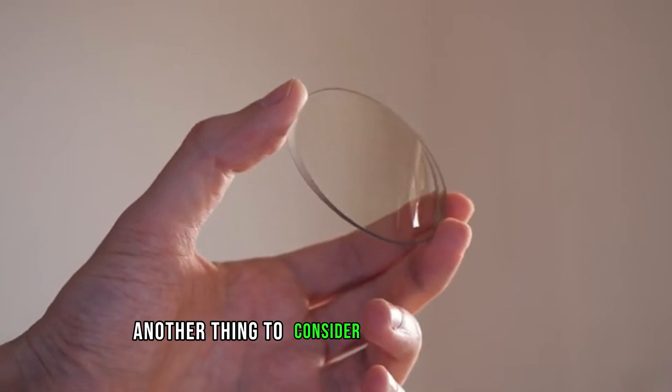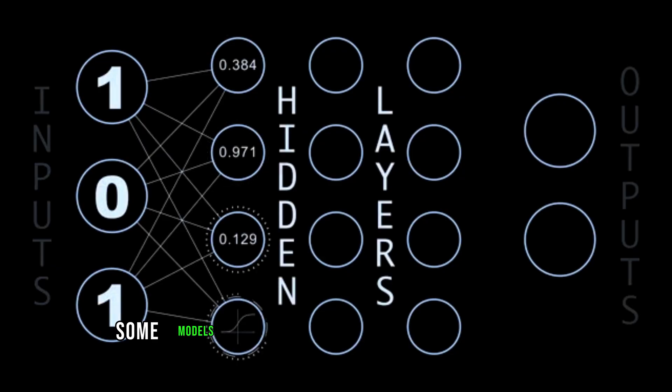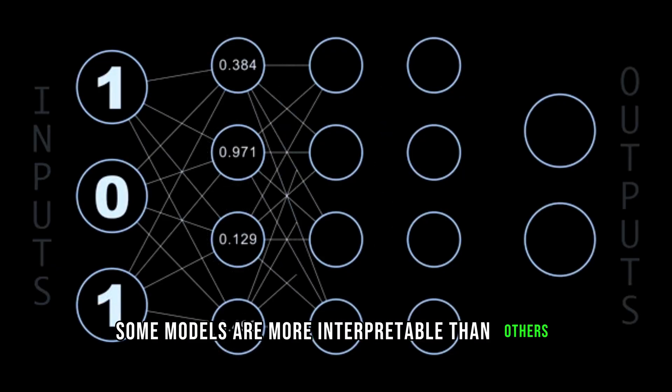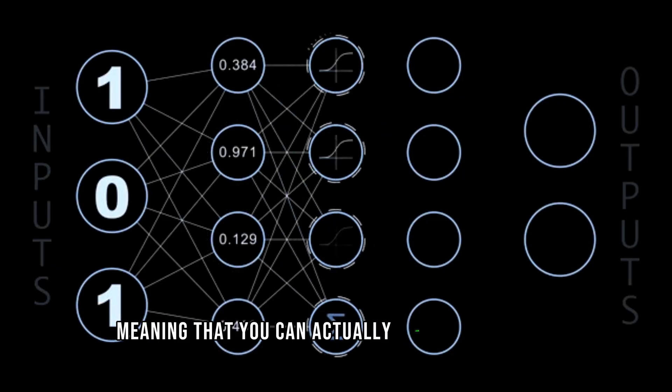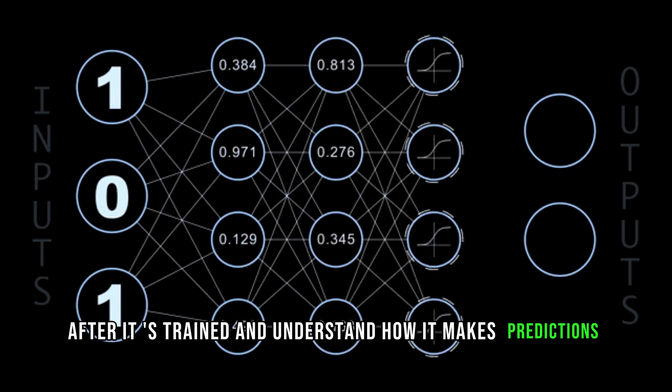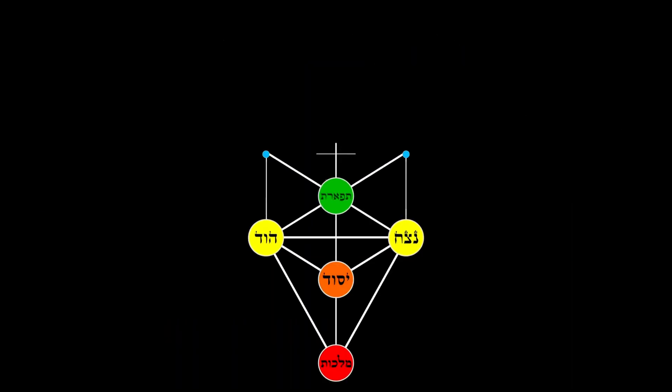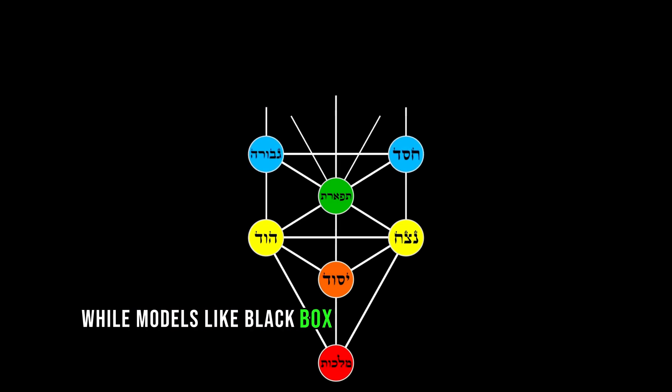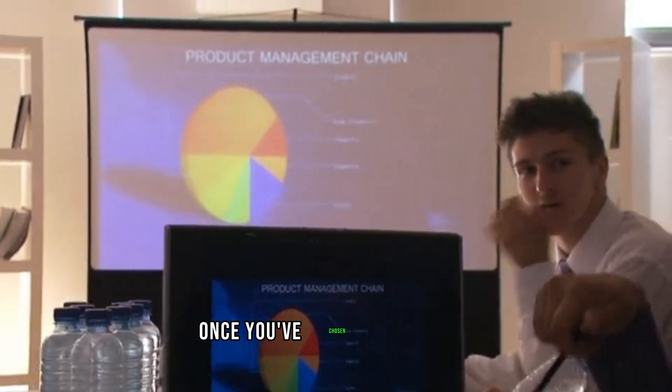Another thing to consider is interpretability. Some models are more interpretable than others, meaning that you can actually look at the model after it's trained and understand how it makes predictions. Decision trees are very interpretable, while models like black box neural networks are not as interpretable. Once you've chosen your model, you can start training it.